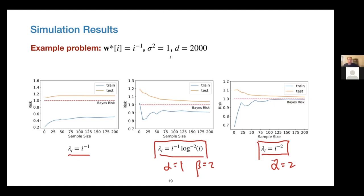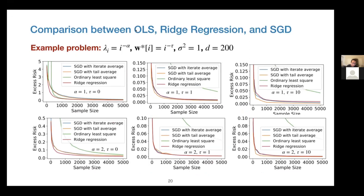A comment is made that it would be interesting to visualize the eigenvalue spectrum. The speaker agrees, noting that both cases have polynomially decaying eigenvalues, but one decays slightly faster than 1/i due to the logarithmic factor.